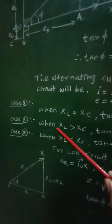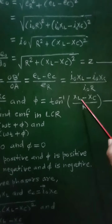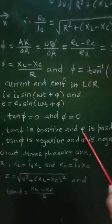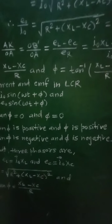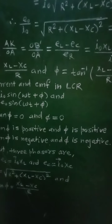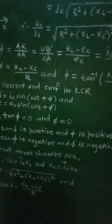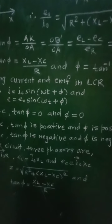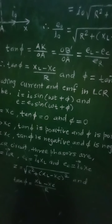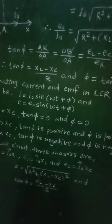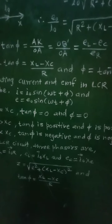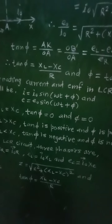Second case: when XL > XC. The difference is positive, so tan φ is positive and φ has a positive value. Therefore, the voltage leads the current by a phase angle of φ, and the AC circuit is inductance-dominated — it behaves as an inductive circuit with maximum inductance.